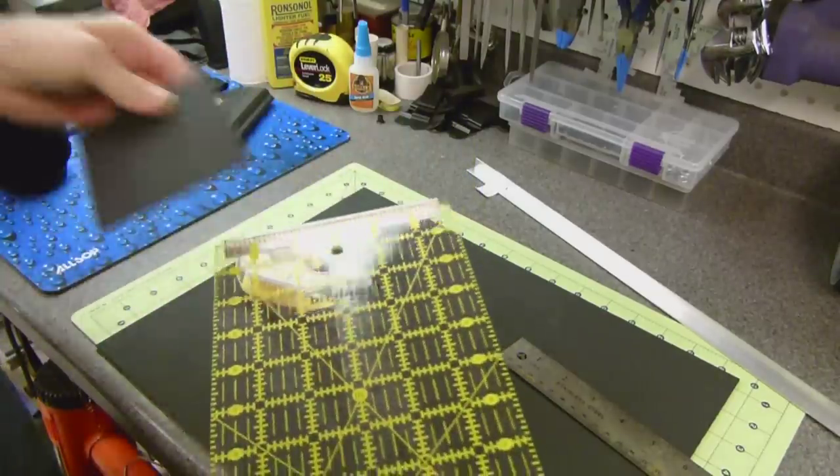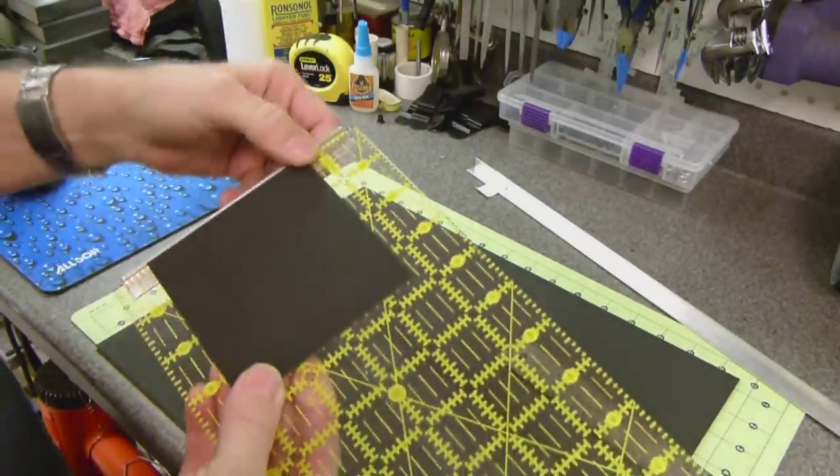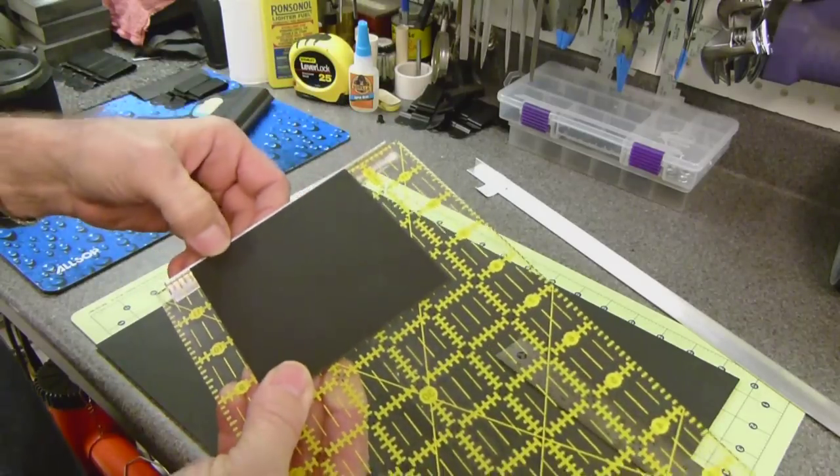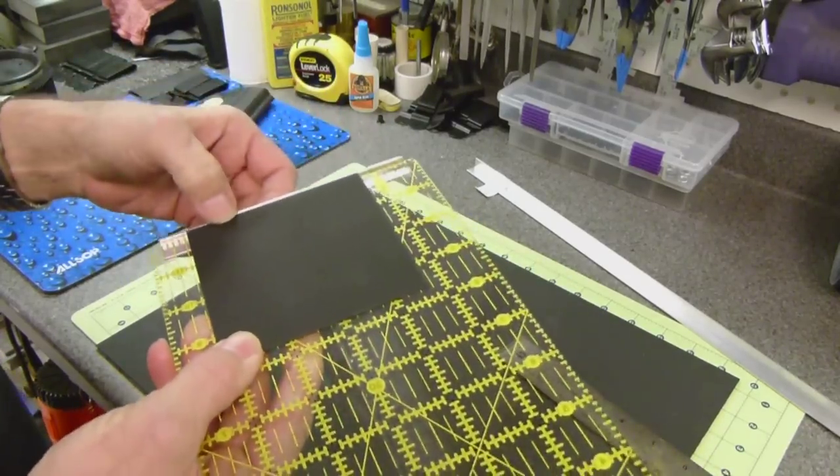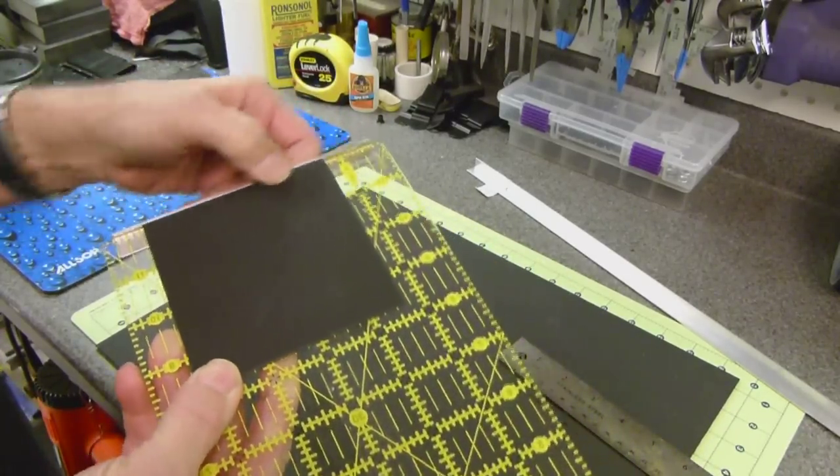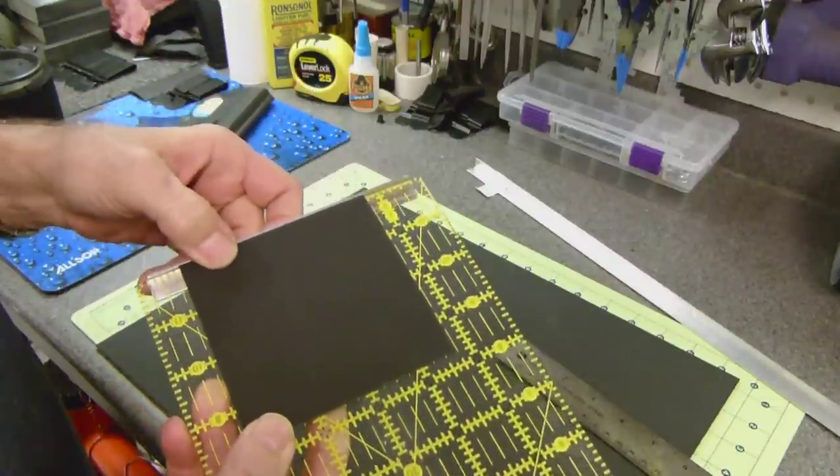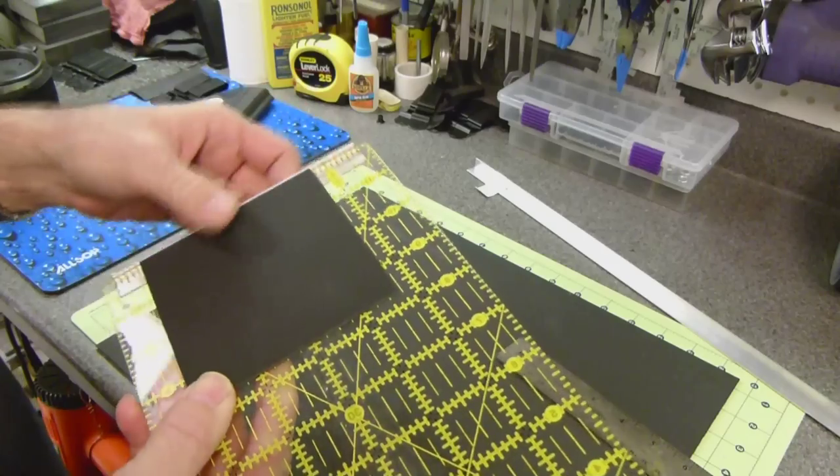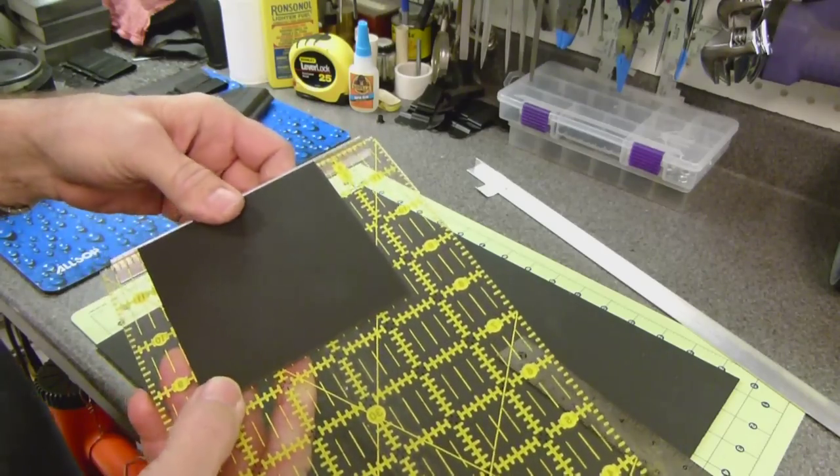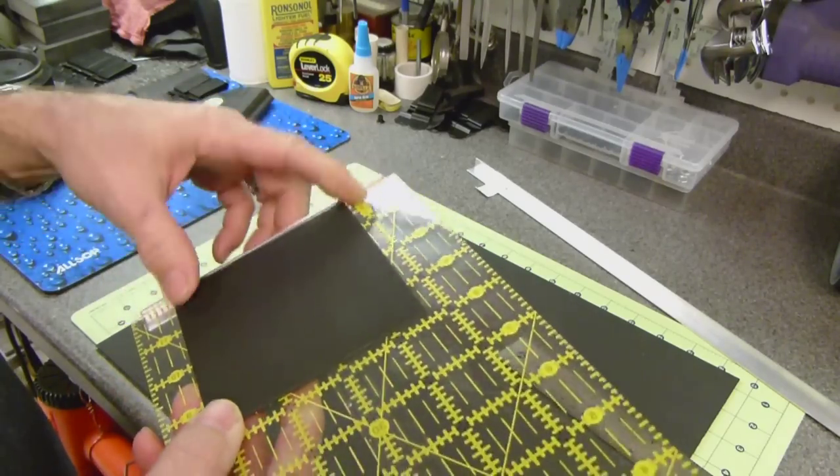And then I cut down the one edge of the aluminum so that it's just about the same thickness as 80 thousandths kydex. Maybe a little bit shy. So it'll work for 60, 80, and 90 thousandths kydex.